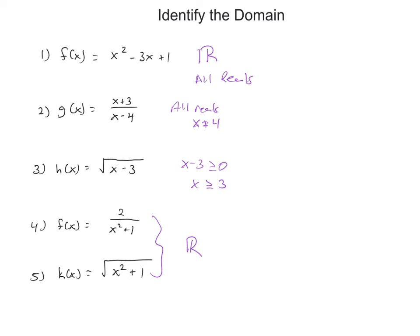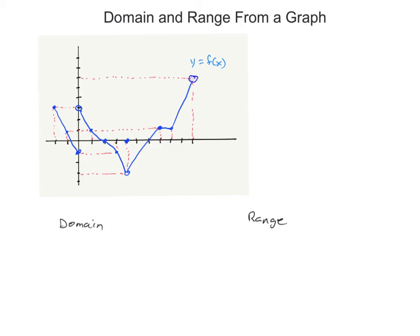In interval notation: all reals is (−∞, ∞). All reals with x ≠ 4 is (−∞, 4) ∪ (4, ∞) using parentheses on everything. x ≥ 3 is [3, ∞) with a bracket. And the last two are both (−∞, ∞).